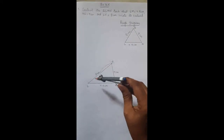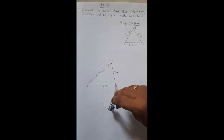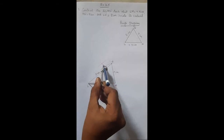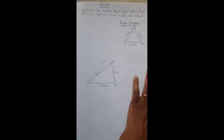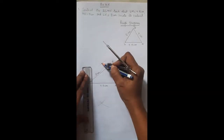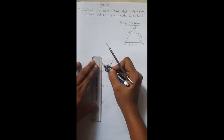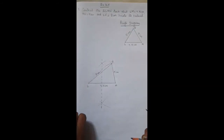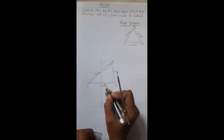Take more than half of LM. With M as center, draw arcs above and below. Then for the same measurement, with L as center, draw arcs above and below to intersect the previous arcs. Join the two points of intersection with a dotted line so you can differentiate the perpendicular bisector from the median.